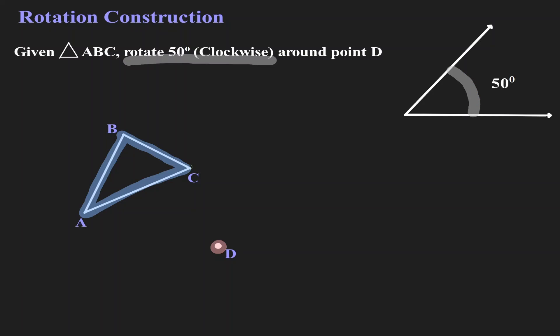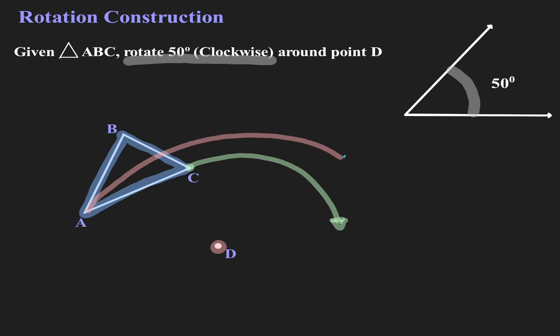So what we want to do: we want to get point C and rotate it around D 50 degrees. And we want to do the same for A — rotate it about 50 degrees in this direction — and we want to get point B and rotate it 50 degrees in this direction as well. Now that we have a visual of what we want to do, let's actually talk about the construction.